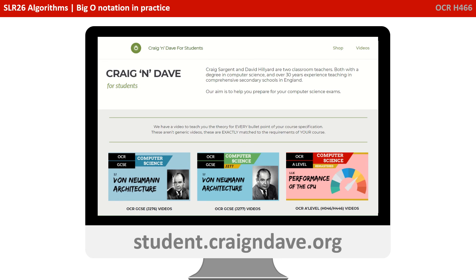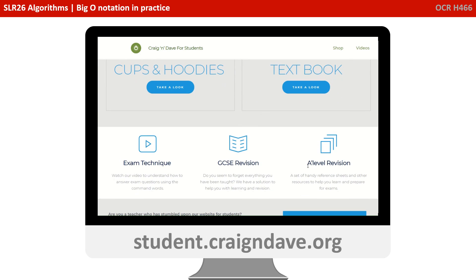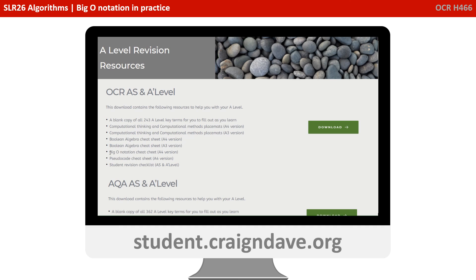This resource is freely available at student.craiganddave.org. Simply scroll down and select A Level Revision. When you're there, you can just press download to get this cheat sheet along with others completely for free.